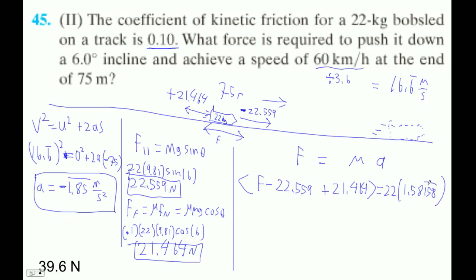So minus 22.559 plus 21.464 equals 22 times 1.85158 repeating. And that is down the plane, it's negative. You've got to carry that negative there. So that's down the plane.